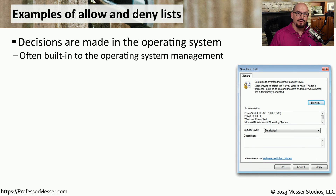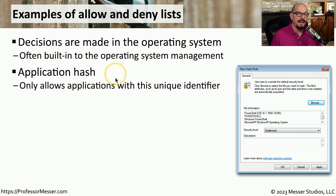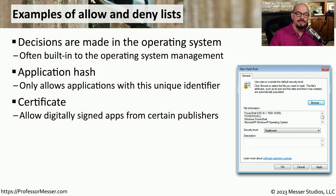Windows provides extensive controls for allowing or denying what applications can run. This can be done with an application hash, where an application is identified not by its name but by a very specific hash associated with the application itself. If something changes with the application, the hash will no longer match and the rule will not apply. Some applications are also digitally signed, so there's a certificate you can reference for who signed the app. If an application is from Microsoft, Adobe, Google, or any other organization with a signed app, you might set a rule that says if it's digitally signed it's allowed, and if it's not digitally signed it won't run.